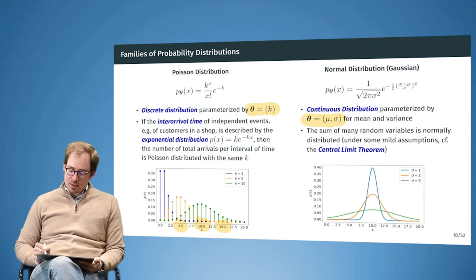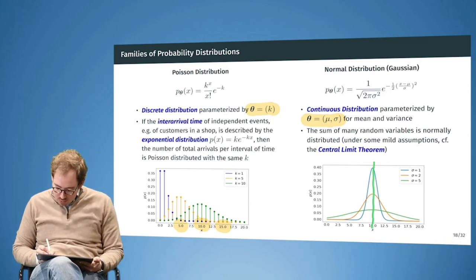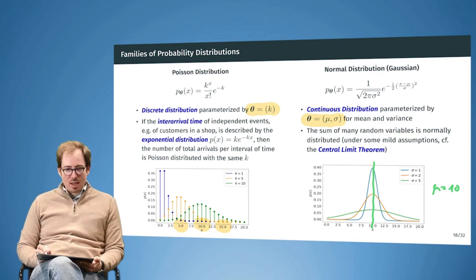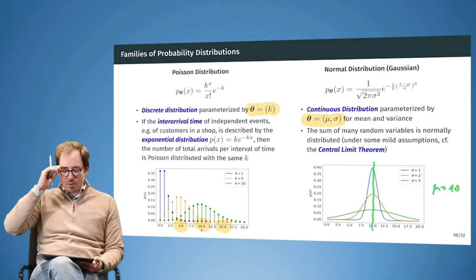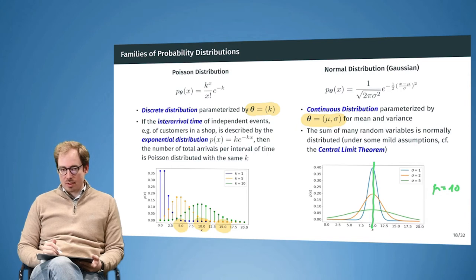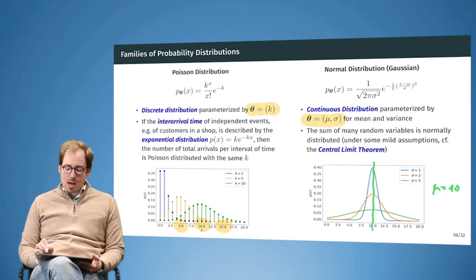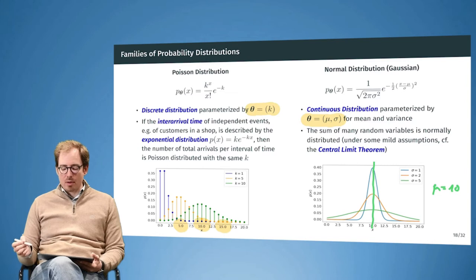In the plot, the distributions are centered around mu equals 10, with different standard deviations shown. The smaller the standard deviation, the sharper the normal distribution. The normal distribution is important because it is mathematically easy to deal with and occurs often in nature. If one takes the sum of many random variables, it becomes closer and closer to the normal distribution as the number of variables increases — this is known as the central limit theorem. Even the Poisson distribution, if k is made very large, will resemble a normal distribution.